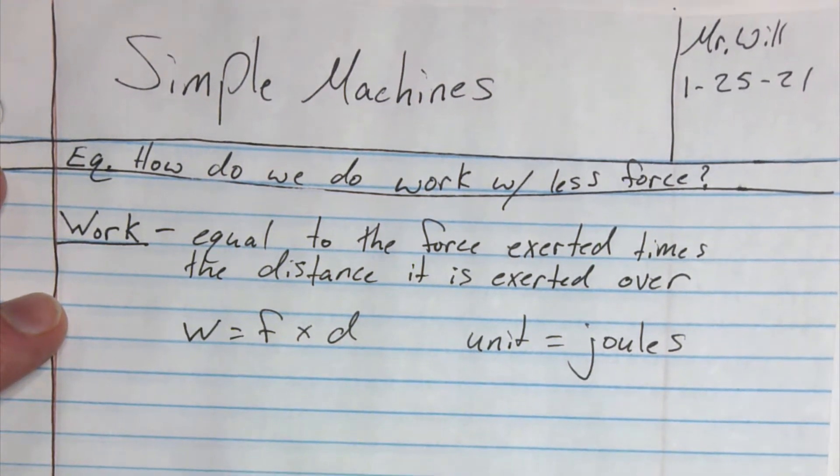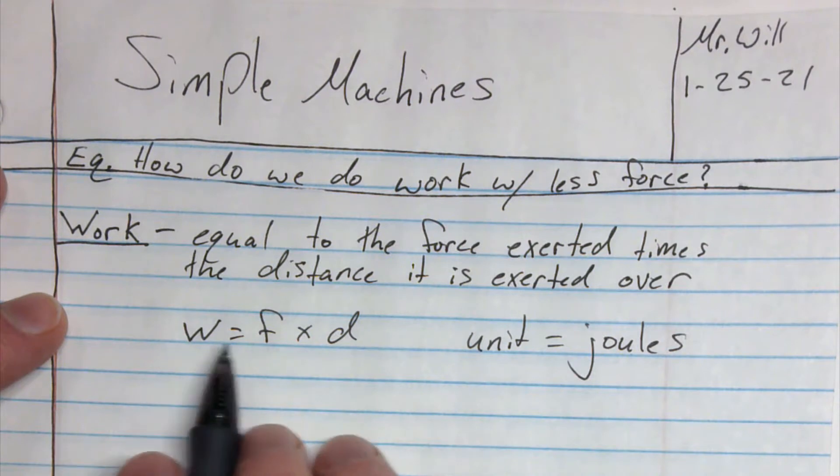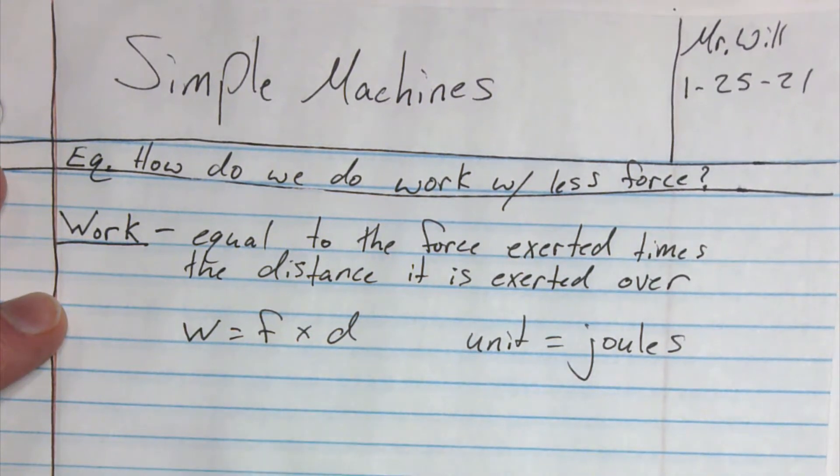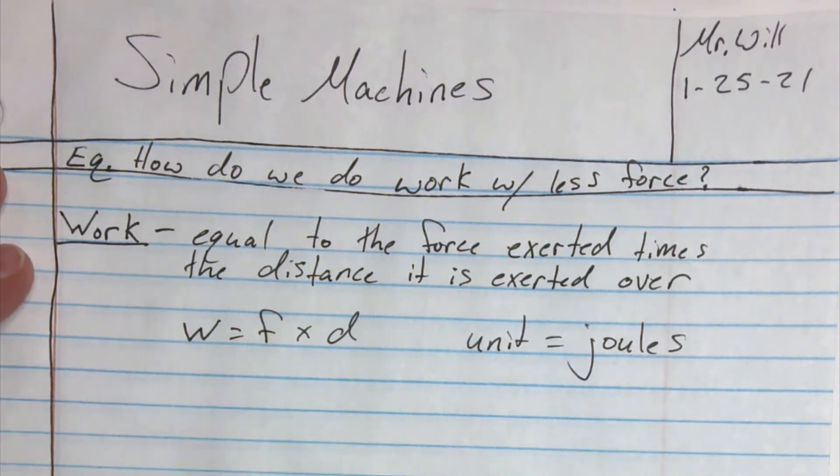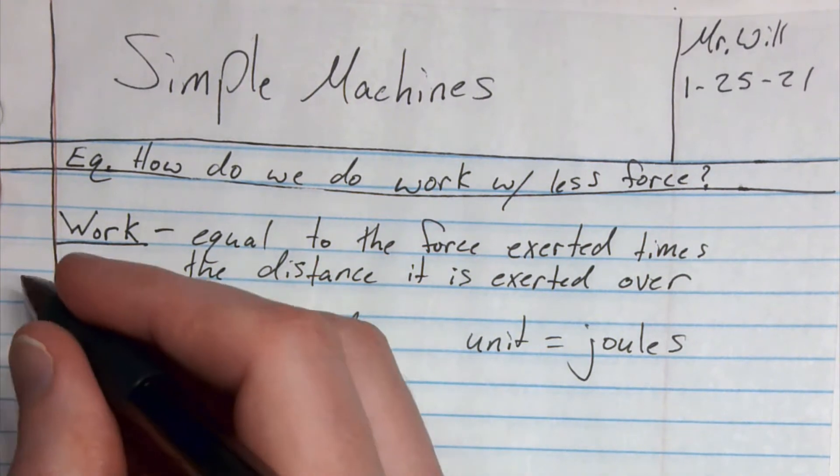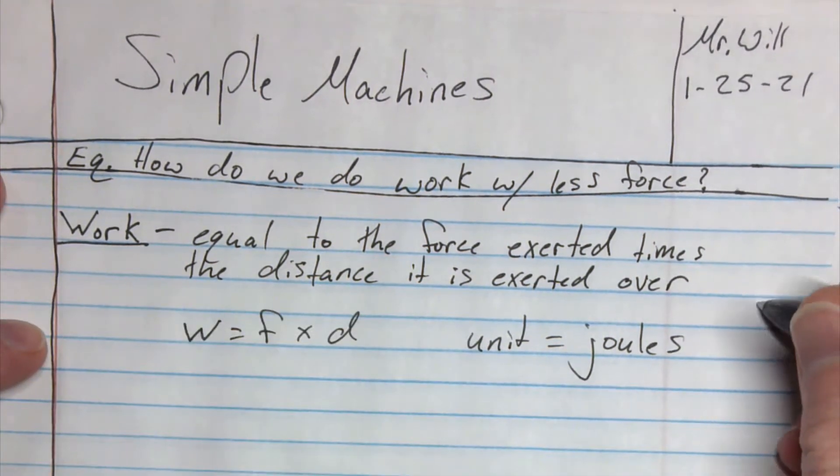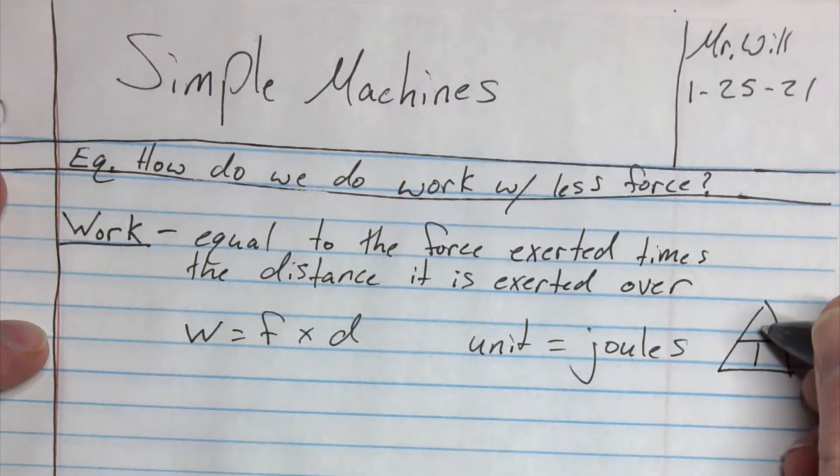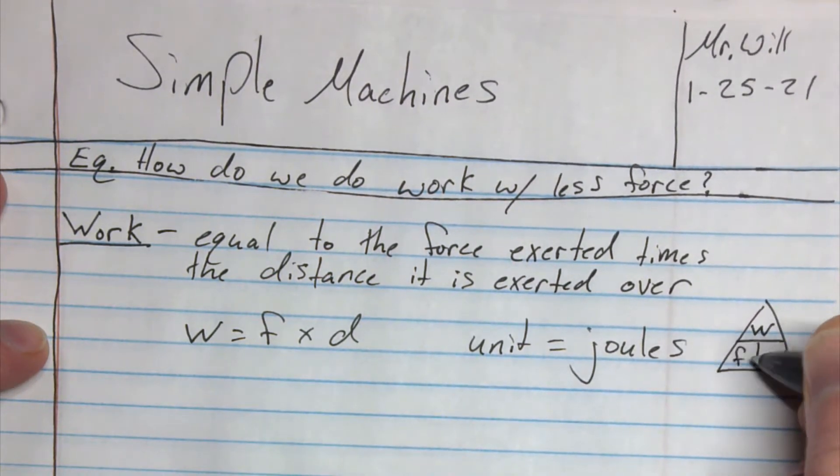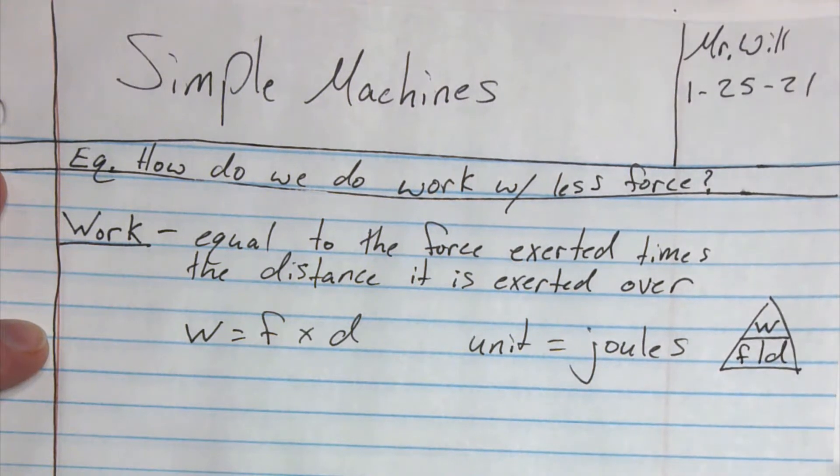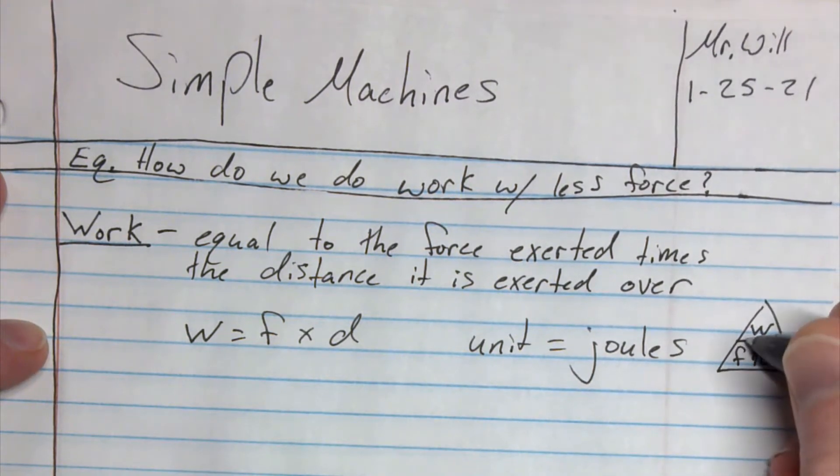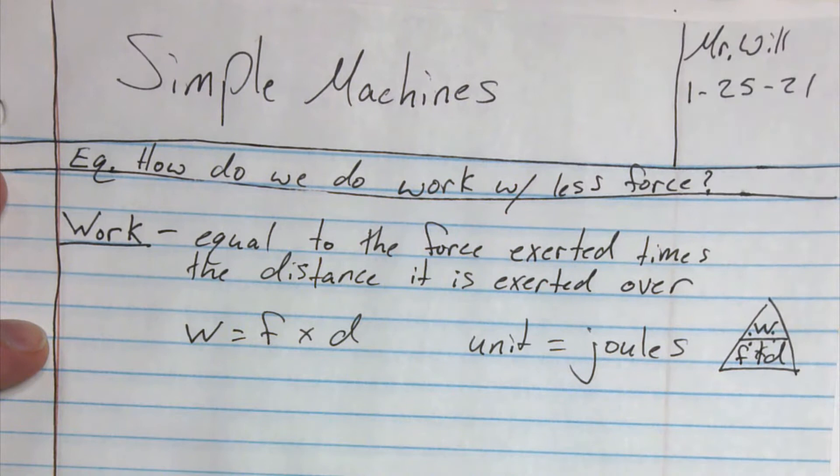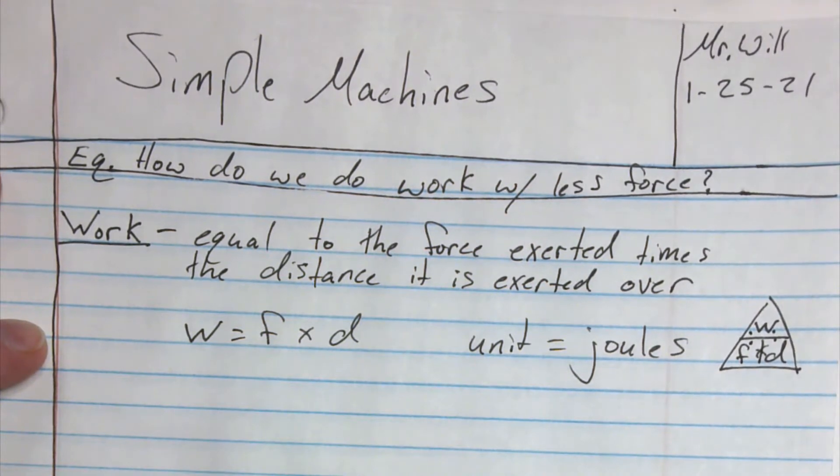We also have the magic triangle for this because this is a pretty basic equation. We have the work on top, and the force and the distance on the bottom. So remember, if they're next to each other, you multiply. If they're above each other, you divide.